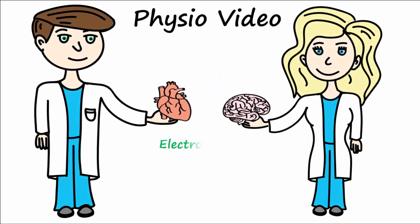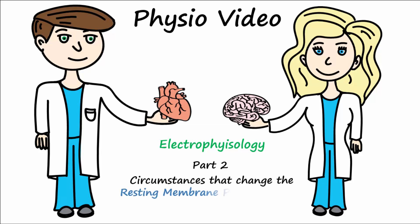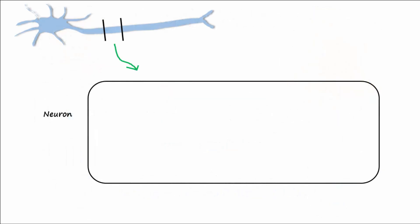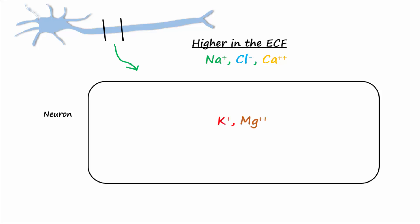Let's talk about the circumstances that can change the resting membrane potential of excitable cells. To begin, you'll have to know that sodium, chloride, and calcium ions are higher in the extracellular fluid, or ECF, and that potassium and magnesium are higher in the intracellular fluid, or ICF, of neurons.